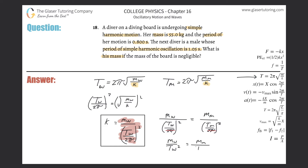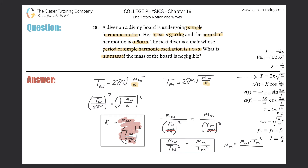We're solving for the mass of the man, so rearranging: mass of the man equals mass of the woman multiplied by the period of the man squared, divided by the period of the woman squared. And there's our formula.